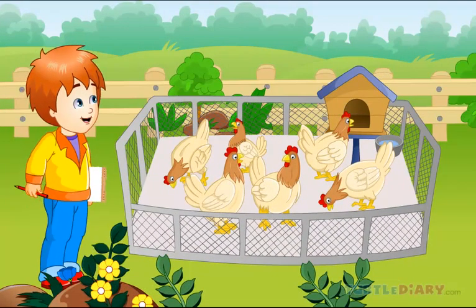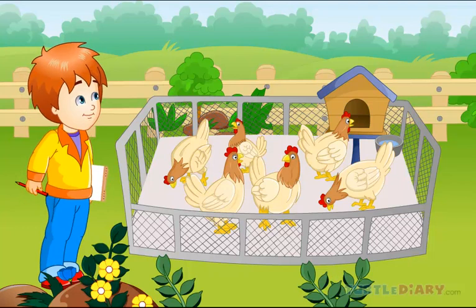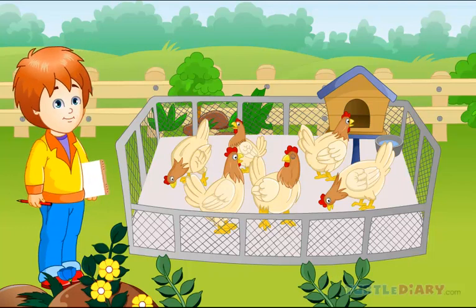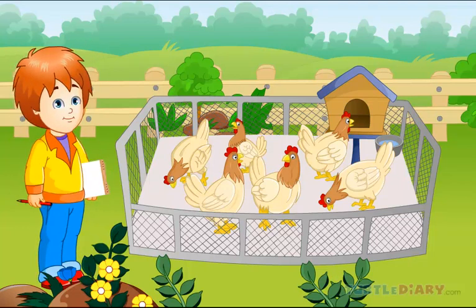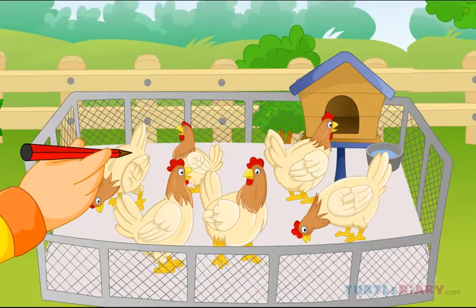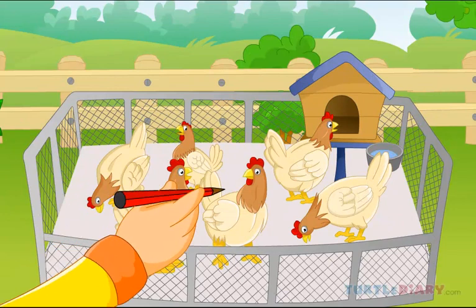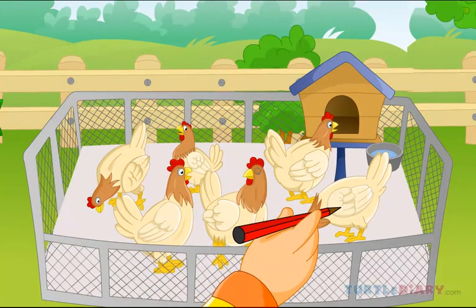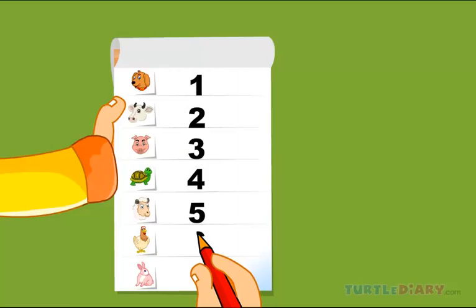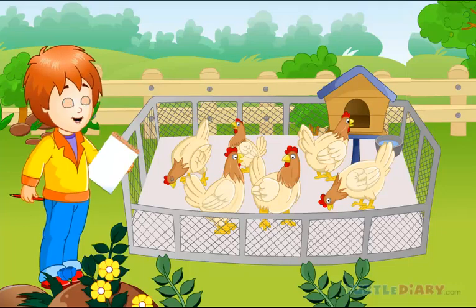There are so many hens in a field. Help me to count them. One, two, three, four, five, and six. Adam has six hens in his farm. Now let's see the next animal.